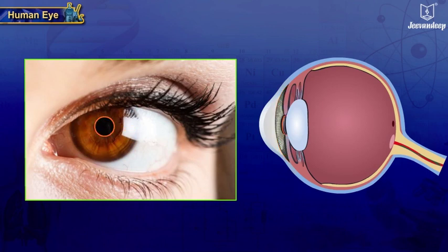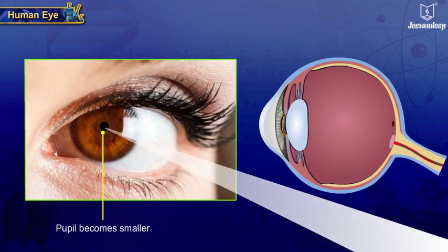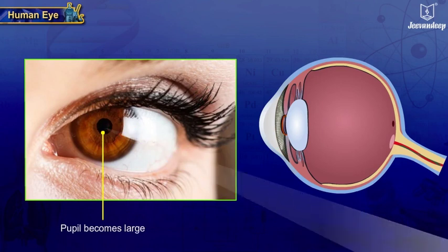The pupil becomes smaller in bright light and enlarges to let more light into the eye.